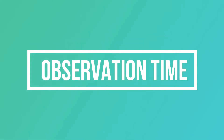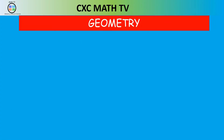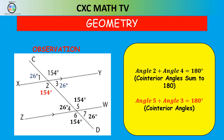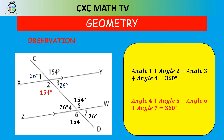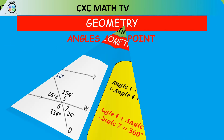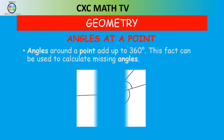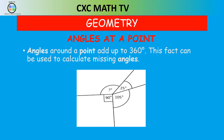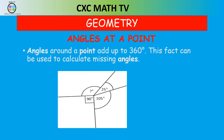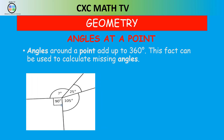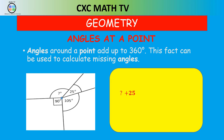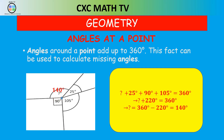Notice that where lines CD and XY intersect, angle 1 plus angle 2 plus angle 3 plus angle 4 sum to 360. Also, angle 4 through angle 7 sum to 360. This leads to the next law: angles around a point add up to 360 degrees. In the diagram, question mark plus 25 plus 90 plus 105 equals 360. Adding those up gives question mark plus 220 equals 360, so the missing angle is 140 degrees.